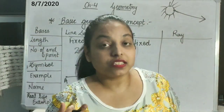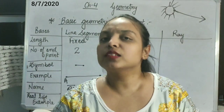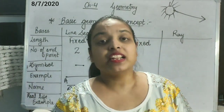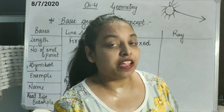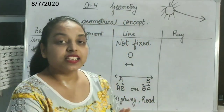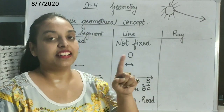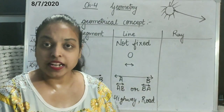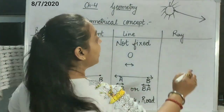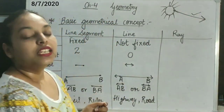But can you tell the ending point of it? No. The ray is moving everywhere, wherever it has space to move. It means there is no end point. We have only one point, that is the starting point, but we are not having any end point. So we can say this is an example of ray.